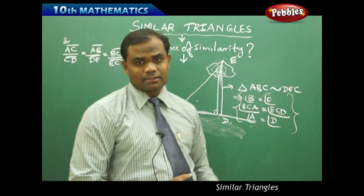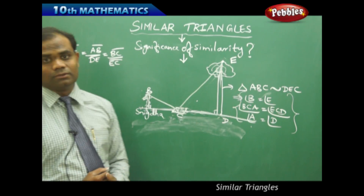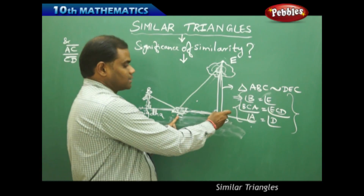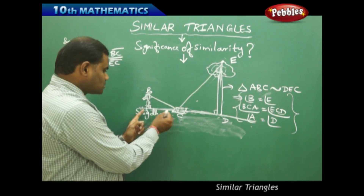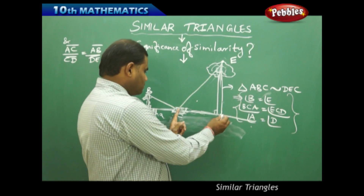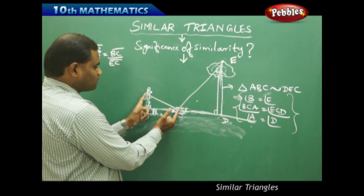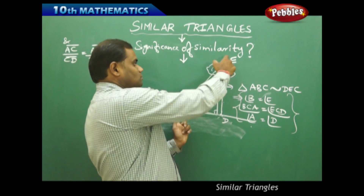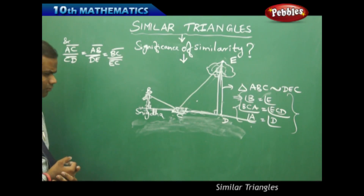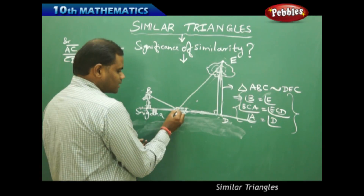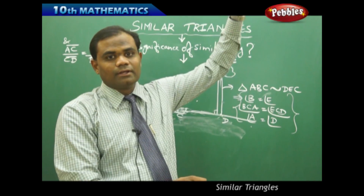When two triangles are similar, two important properties hold: corresponding angles are equal, and corresponding sides are in the same ratio. The word 'corresponding' is very important — the height of the girl corresponds to the height of the tree, and the distance of the girl from the mirror corresponds to the distance of the mirror from the tree. These ground distances can easily be measured with a measuring tape, unlike the tree's height.